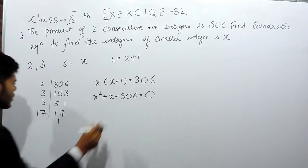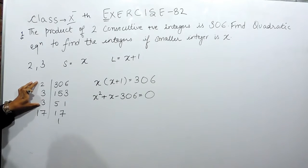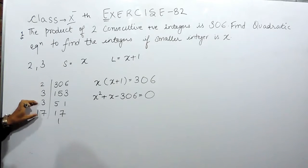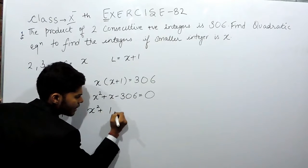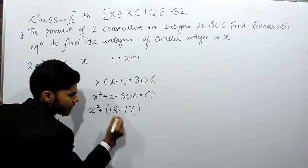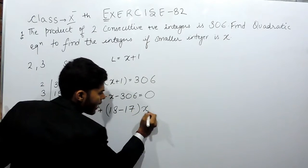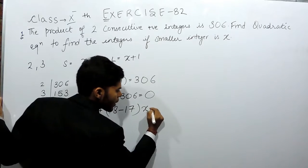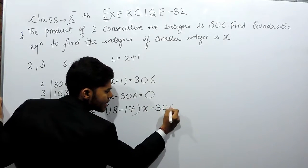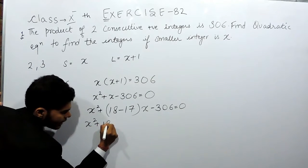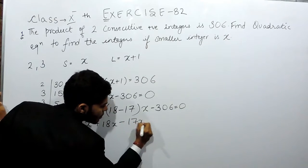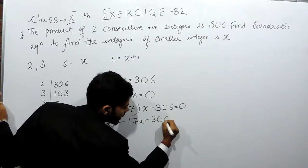We have to arrange them in such a manner that we get x. We can write this like 18 minus 17 will give us x. So x squared plus 18x minus 17x minus 306 equals 0.